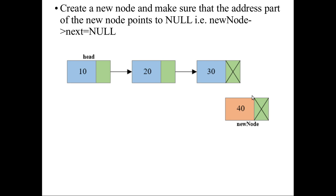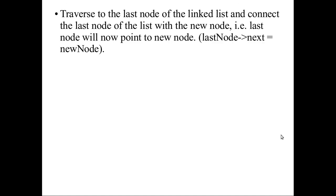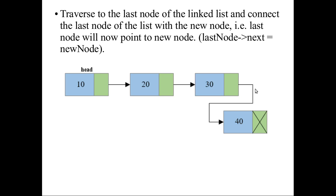So for insertion at the end: first, create the new node; second, make the address field of the new node null. The third step is to create a link from the last node of the existing list to the new node. The last node's address field, which was null before, now points to the new node.